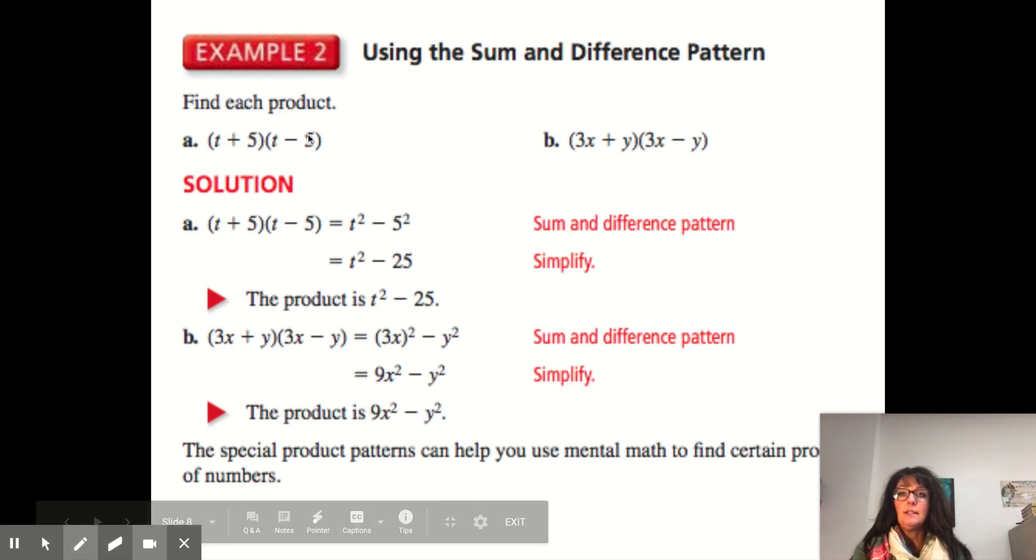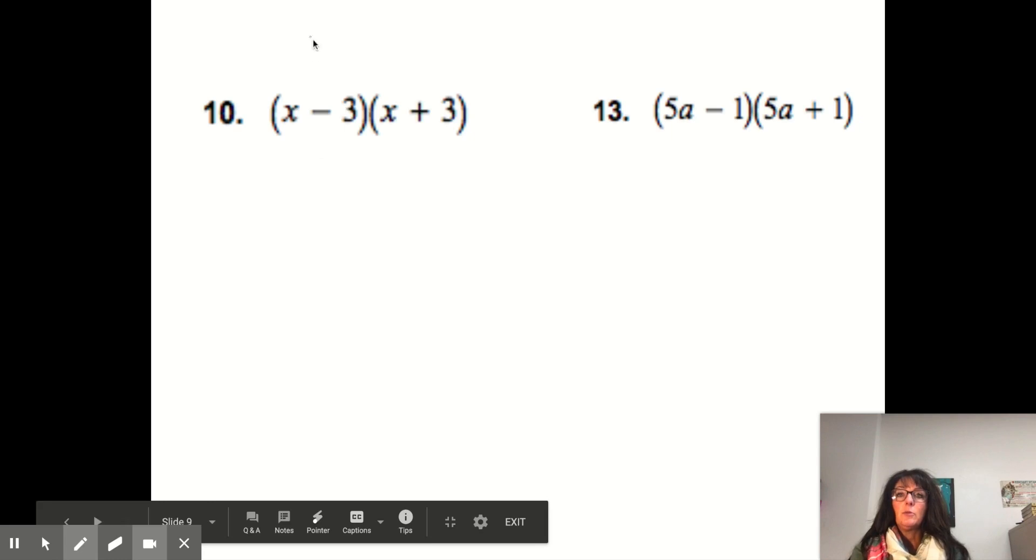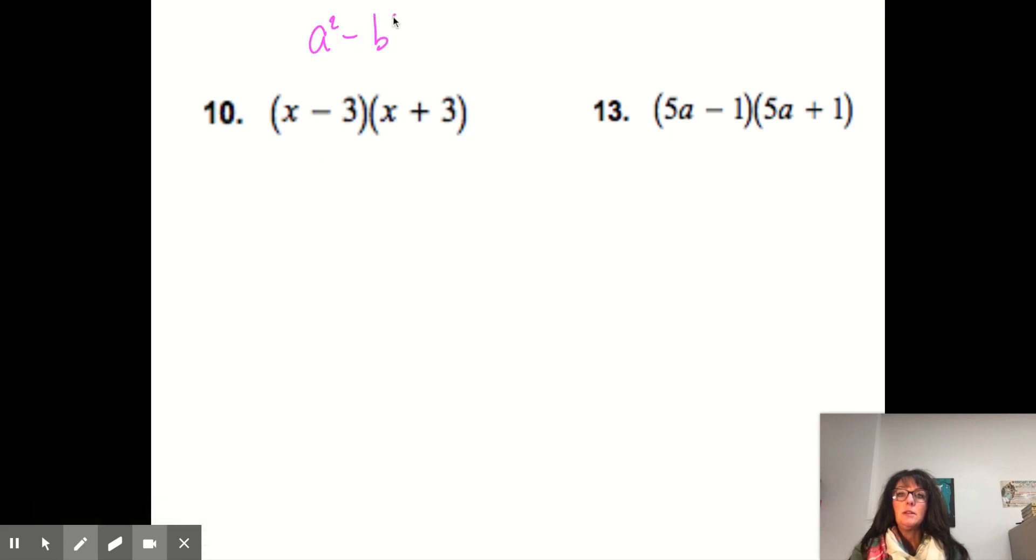So here you see the pattern. (t + 5)(t - 5). So we know that's going to be t² - 5². t² - 5² is t² - 25. So remember the pattern. a² - b². Now there's only one. We don't have an a² + b². And that's if it's the exact same thing, but opposites. So (x - 3)(x + 3) becomes x² - 3² which becomes x² - 9. Simple. Straightforward. Go ahead and pause the video and do number 13. This becomes (5a)² - 1² which equals 25a² - 1.